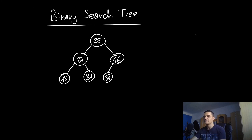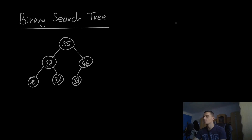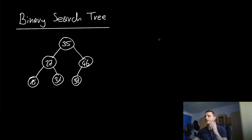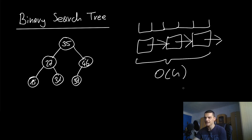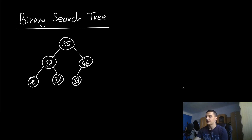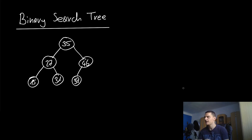Now let's talk about why we even need binary search trees and why they're beneficial. The answer lies in the word 'search.' For most data structures like an unsorted array or a linked list, finding an element has a linear runtime complexity in the worst and average case, because you need to go through all the elements. Even if you only go through half, it's still linear — n divided by two is still a constant factor, not logarithmic.